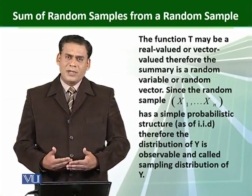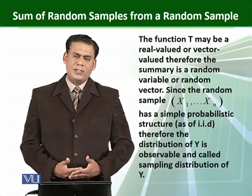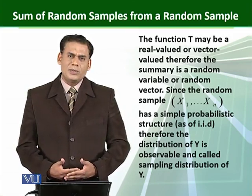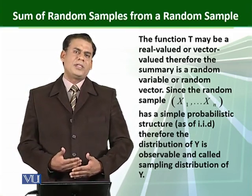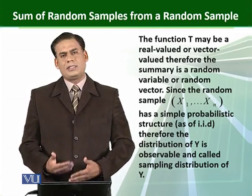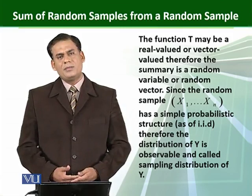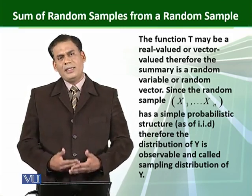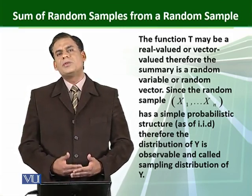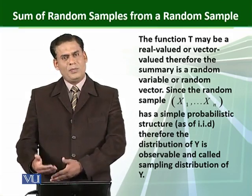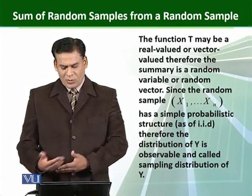Because this function is a real-valued function, it follows some sort of probability structure. When we have iid random samples, it means they follow some sort of certain probability structure.